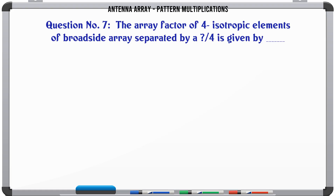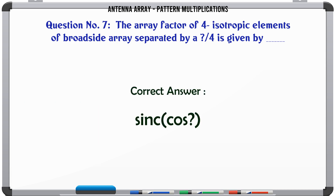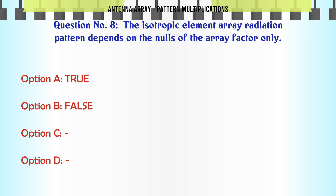The array factor of four isotropic elements of a broadside array separated by λ/4 is given by: A. cos²(·), B. cos²(·), C. sin²(·), D. cos²(·). The correct answer is C. cos²(·).